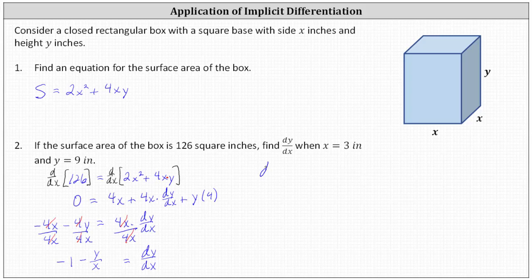Let's write this as dy/dx equals negative one minus y divided by x. Now we'll determine dy/dx when x equals 3 and y equals 9. We often write this as dy/dx with a vertical bar and then the point (3, 9) for x equals 3 and y equals 9. We substitute 3 for x and 9 for y, which gives us negative one minus y over x, which is 9 divided by 3.